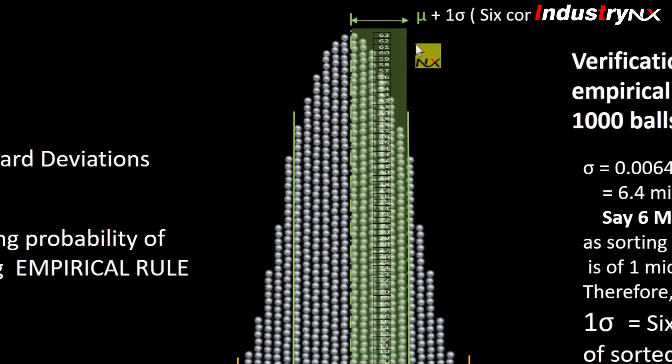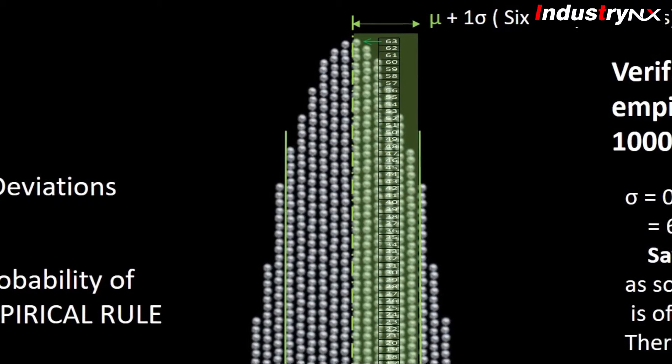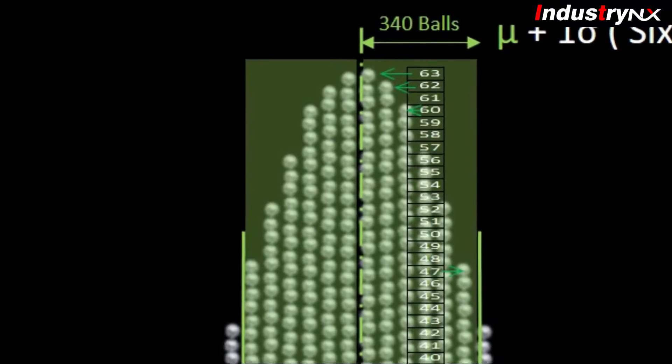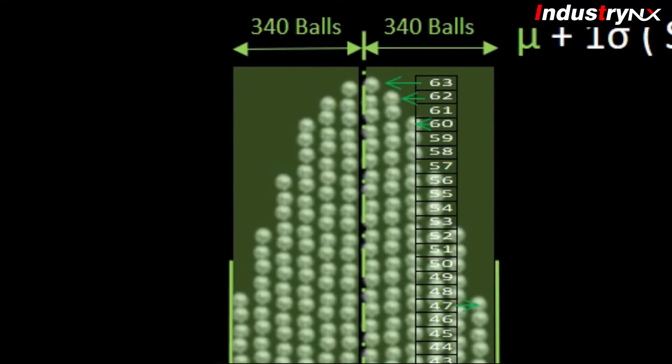Therefore, z-score and p-value tables are derived to find an area or number of balls over an interval for any normal curve at any point.